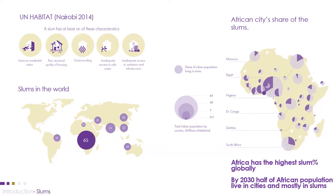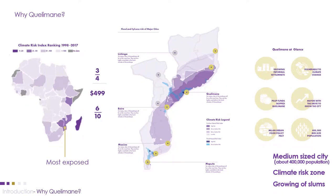When we zoom to the African continent, the sub-Saharan Africa region has the highest urban population living in slum areas, with examples including Nigeria, Mozambique, and South Africa. We chose Kilimani for several reasons: the climate risk map indicates Mozambique is one of the most exposed countries to climate risk, three-quarters of the urban population live in slums, and the GDP is very low at only $499. Six out of ten cities in Mozambique are on coastal areas.